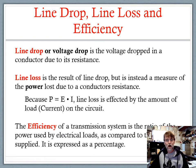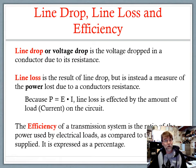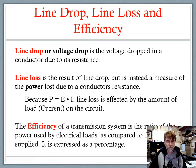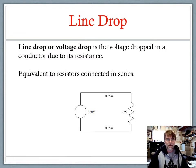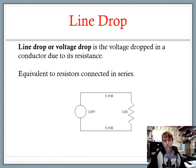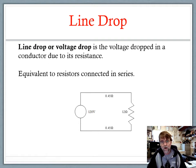Efficiency of a transmission system is the ratio of the power used by the electrical loads — the resistors in the circuit — compared to the power supplied by the power supply, and it is expressed as a percentage. Line drop or voltage drop is the voltage dropped across the conductors due to their resistance. Here's a simple circuit: we have a 120-volt power supply and a 12-ohm resistor.